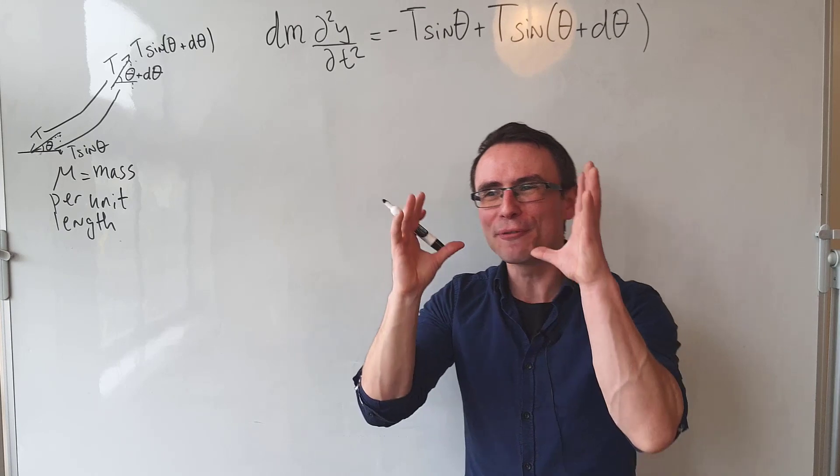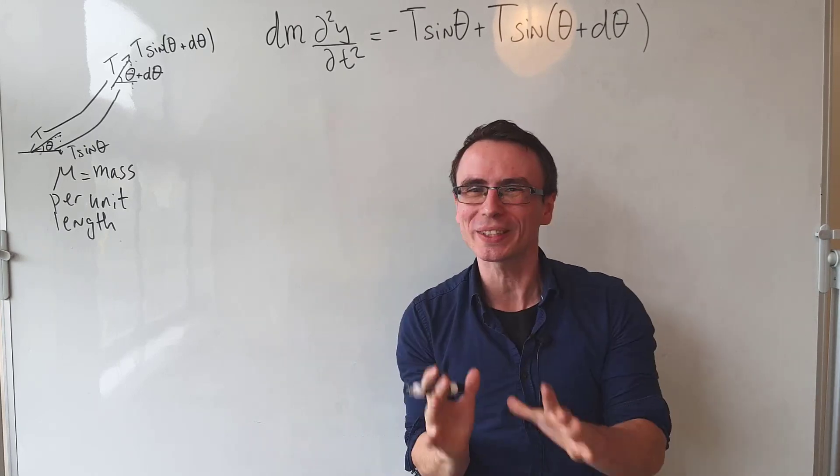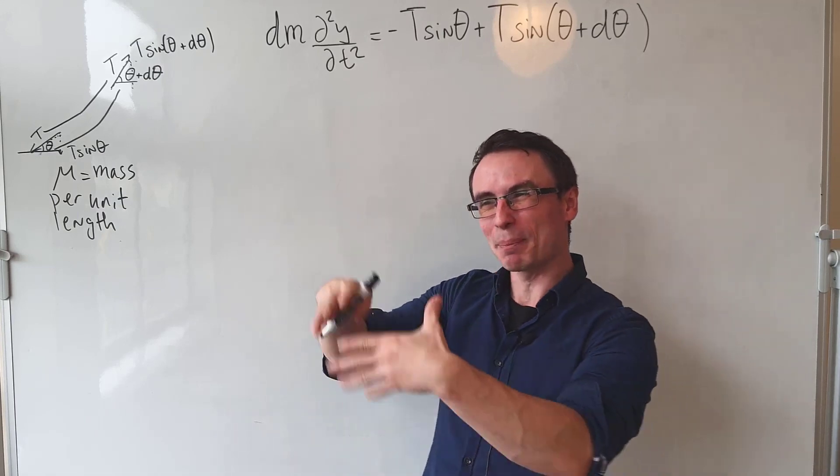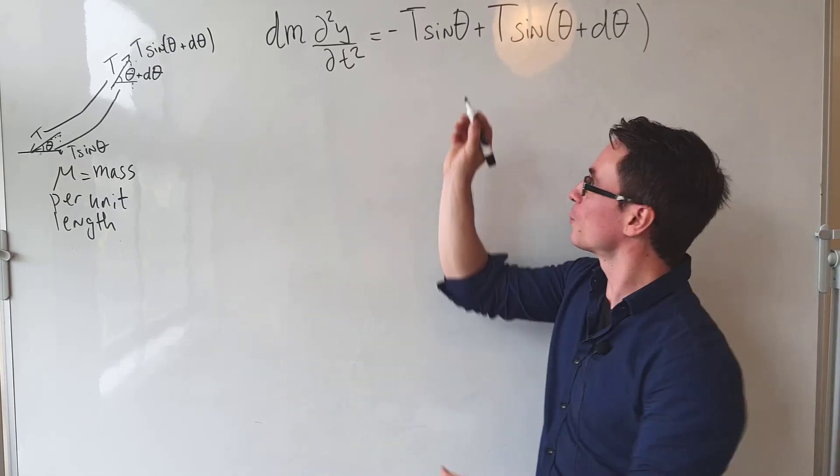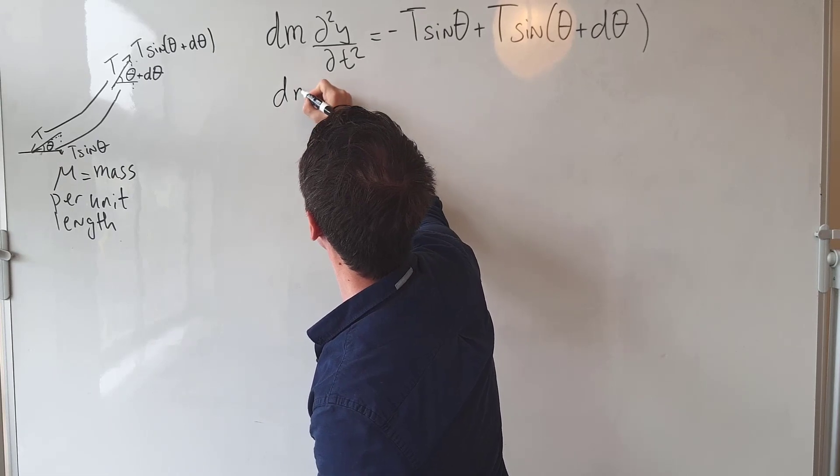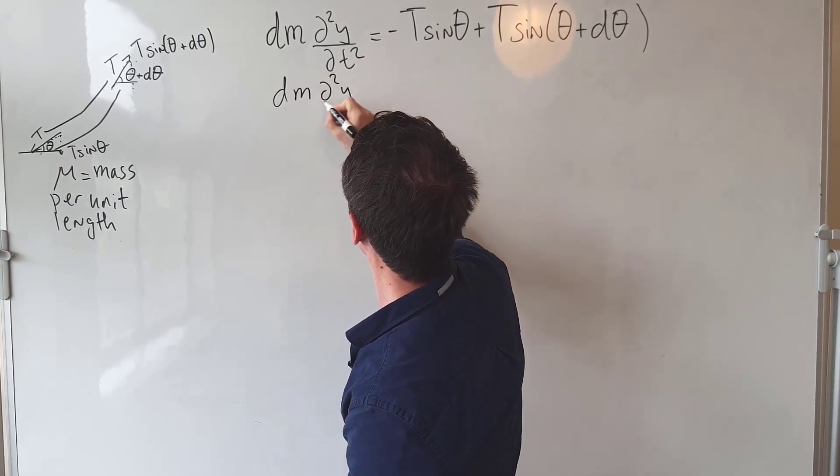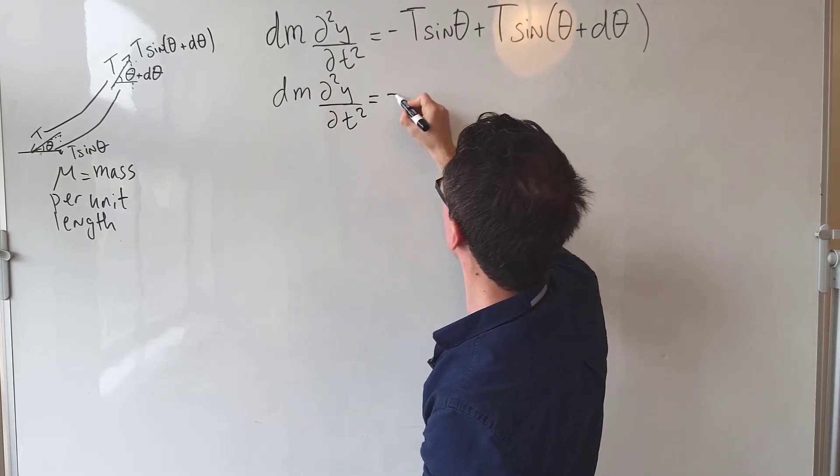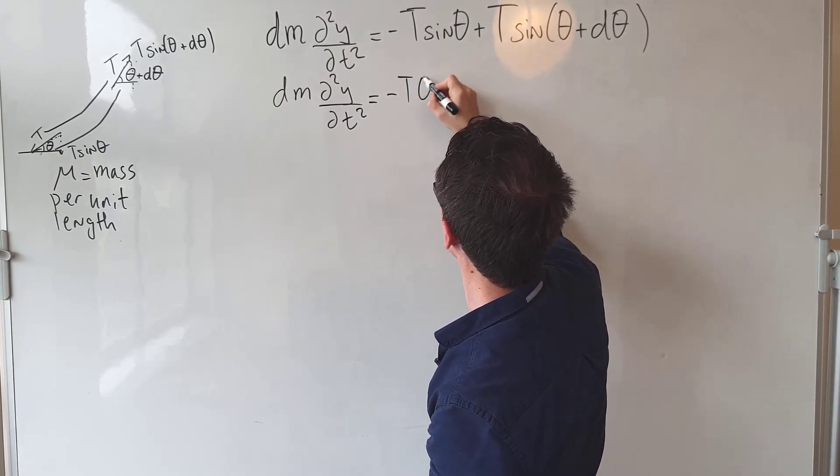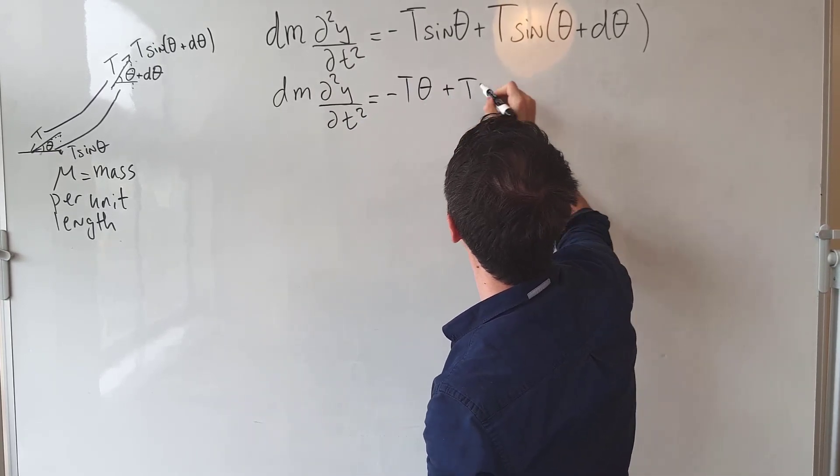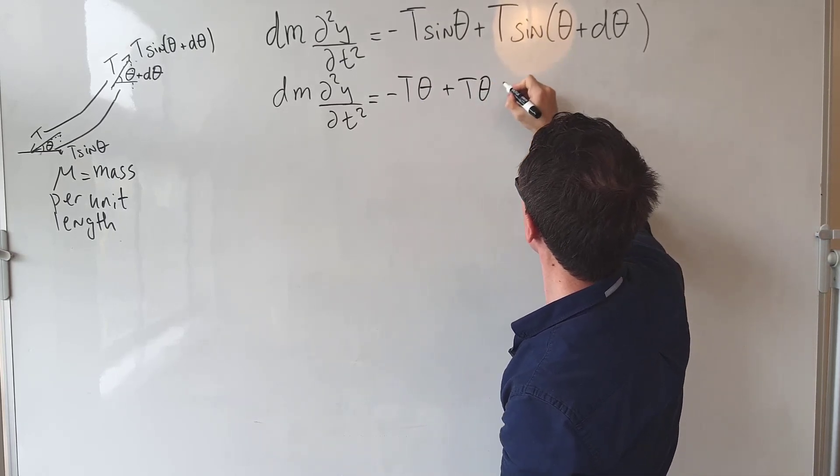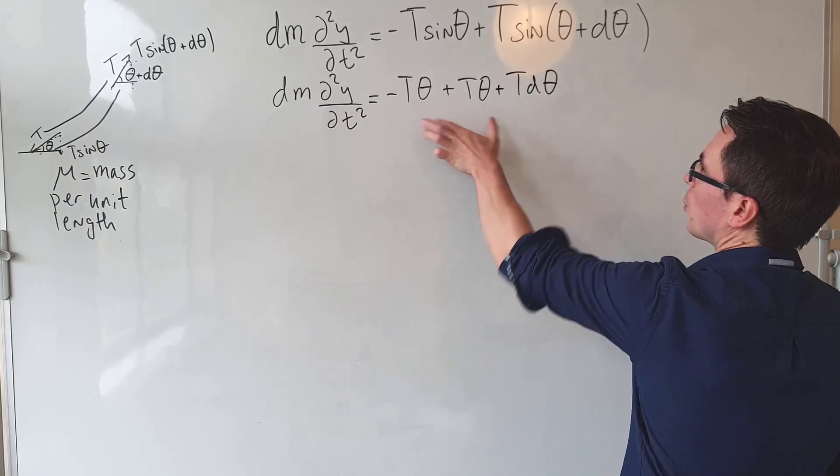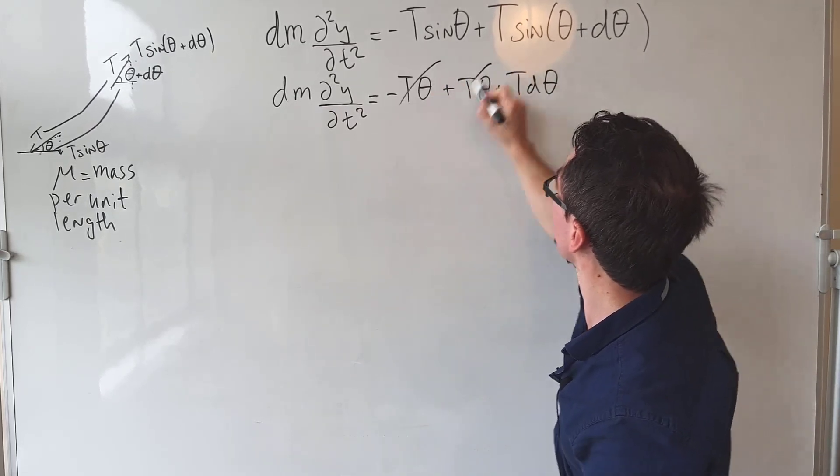Because we're acting over a very small distance, we can totally use the small angle approximation that sin theta is approximately equal to theta in radians. We can write this as dm times the second derivative of the displacement equals -T theta + T theta + T d theta. Notice that those two are essentially going to cancel out.